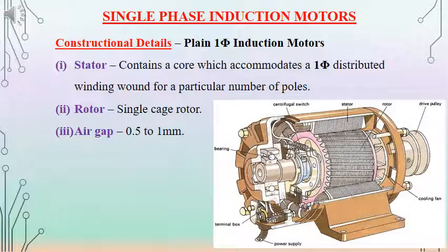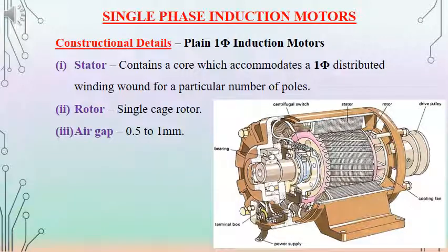We will consider the construction details of single phase induction motor. We have the stator, rotor, and air gap. On the stator side, the motor has a core accommodating a single phase distributed winding, wound for a particular number of poles depending on the speed required. On the rotor side, it is a squirrel cage type as in three phase induction motors. The air gap between rotor and stator is of the order of 0.5 to 1 millimeter.